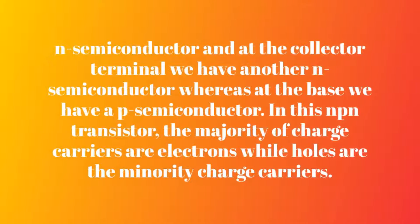That means that at the emitter we have an N-semiconductor and at the collector terminal we have another N-semiconductor, whereas at the base we have a P-semiconductor. In this NPN transistor, the majority of charge carriers are electrons while holes are the minority charge carriers.